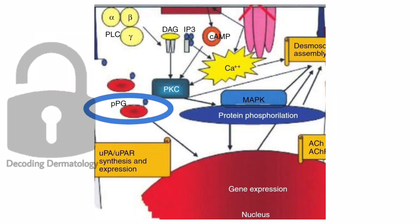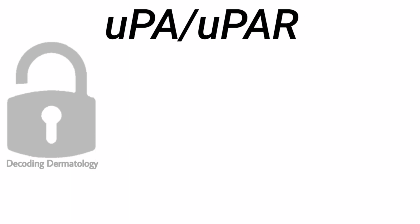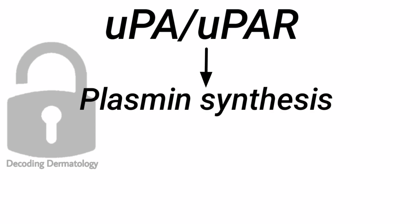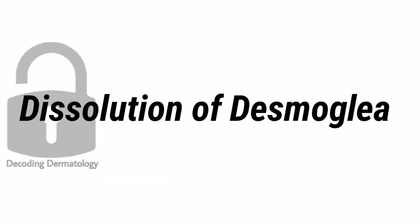This causes conformational changes in the desmoglein that is unable to maintain proper adhesion. Plakoglobin can also act as a transcription factor and alters gene expression, leading to increased uPA (urokinase plasminogen activator) synthesis and expression, as well as its receptor expression. This leads to formation of plasmin, which causes proteolysis of the extracellular matrix — that means it dissolves the desmoglia.